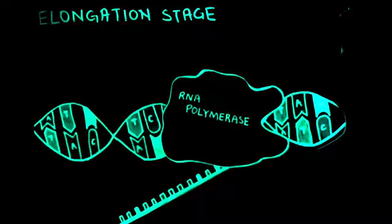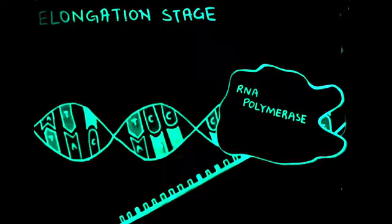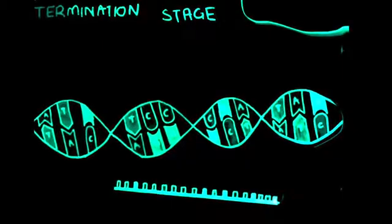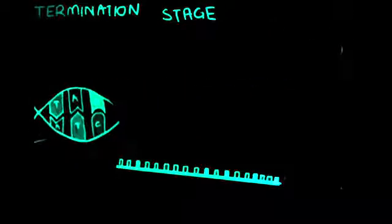When the RNA polymerase reaches the terminator codons, it stops and the creation of the mRNA is complete. However, before the mRNA can leave the nucleus to continue on to translation, it has to undergo some modifications.